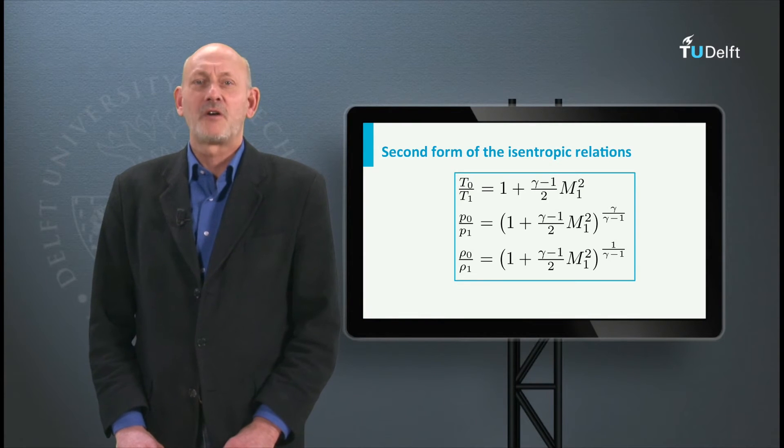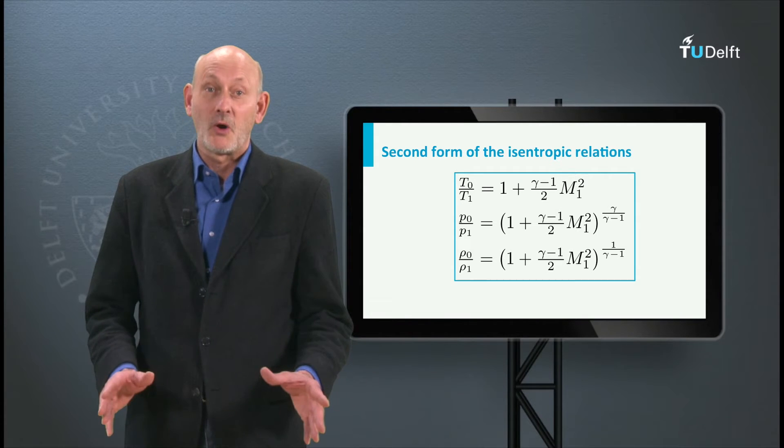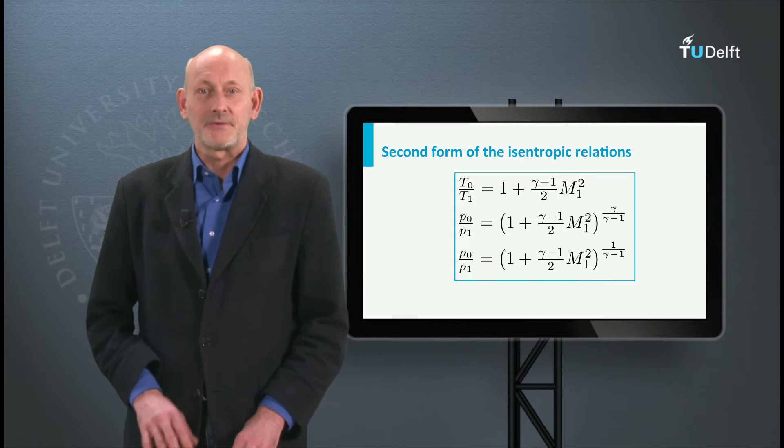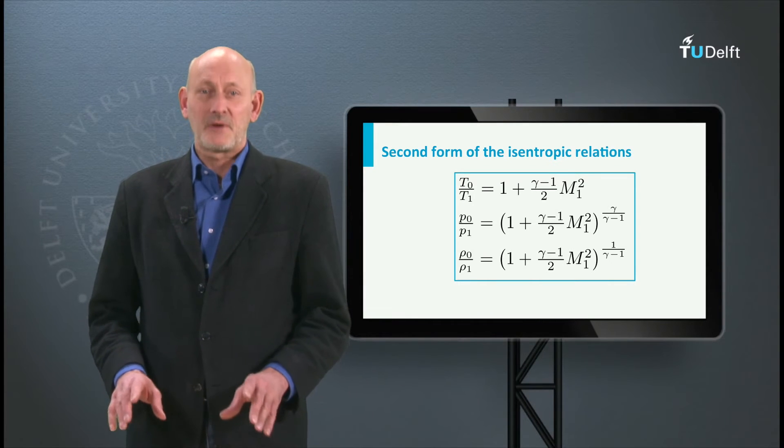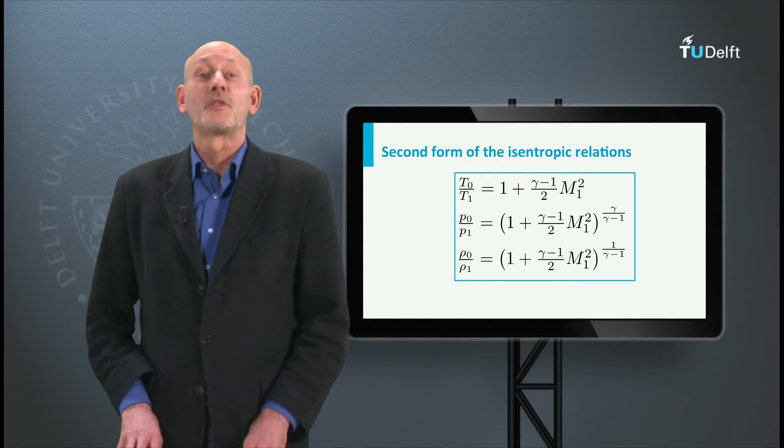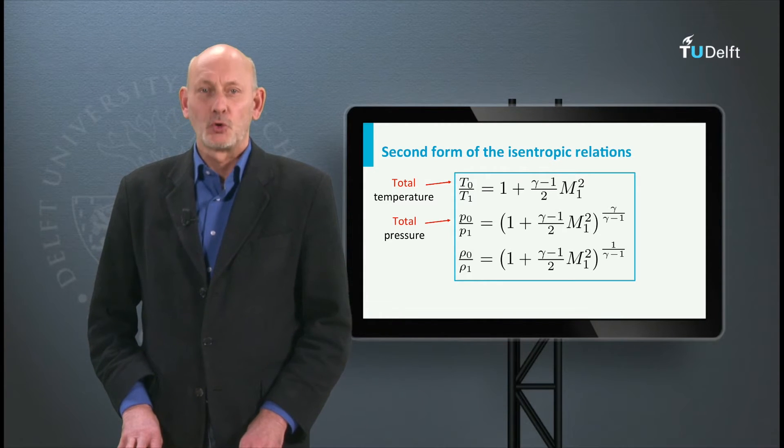We have found a second form of the isentropic relations using the energy equation with the velocity zero at a certain point upstream. Let's call this point station zero. The temperature and pressure in station zero, so where the velocity is zero, are called the total temperature and the total pressure.